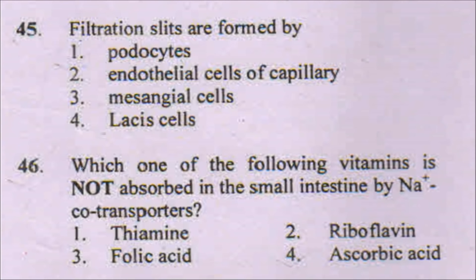Question 45 is also very simple. The filtration slits and the Bowman's capsule of the nephron are formed by podocytes. The next question asks which vitamin is not absorbed in the small intestine by any positive co-transporters — the answer will be riboflavin.